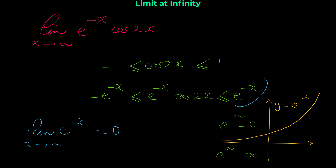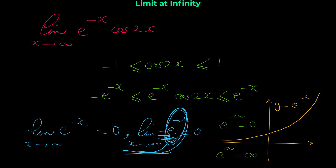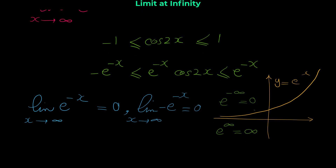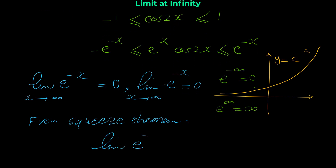The limit of the left function and the limit of the right function are both zero. Based on the squeeze or sandwich theorem, we can conclude that the limit of e to the negative x times cosine 2x as x approaches infinity is also zero.